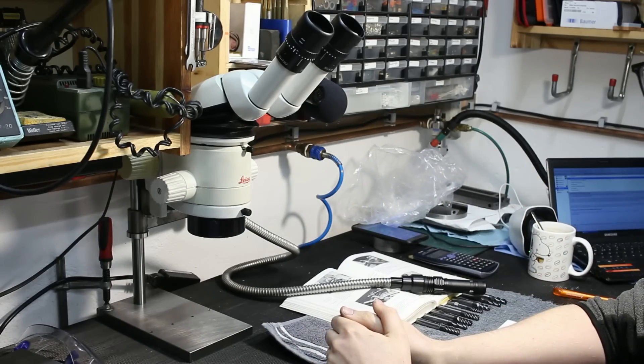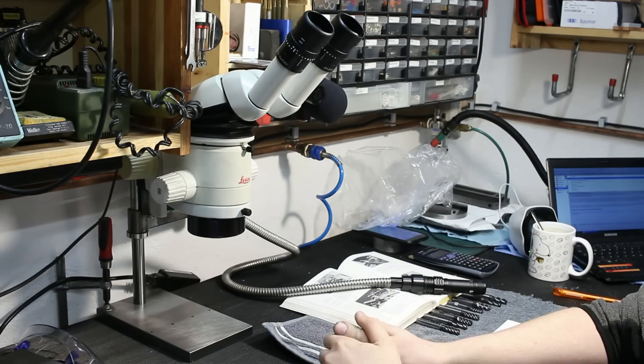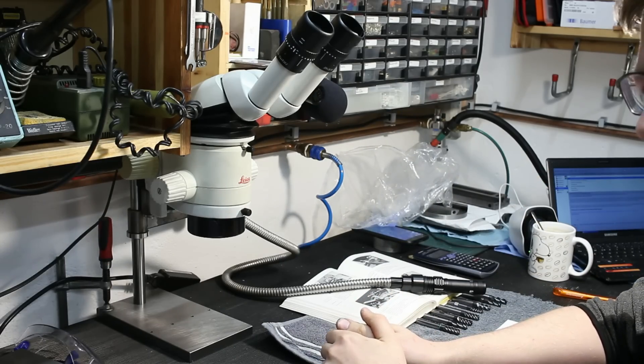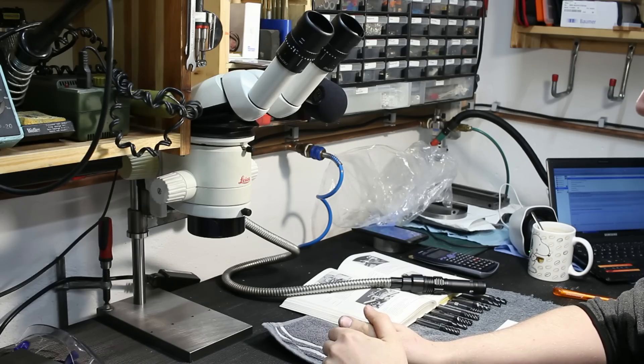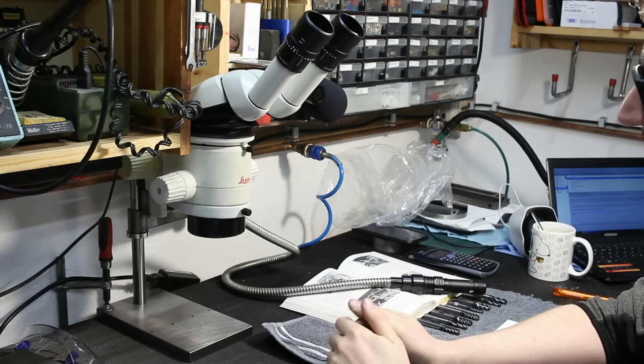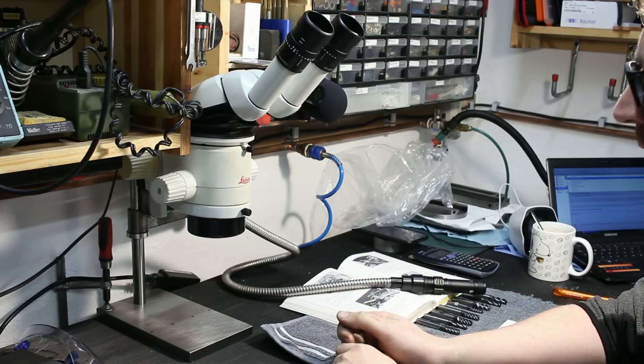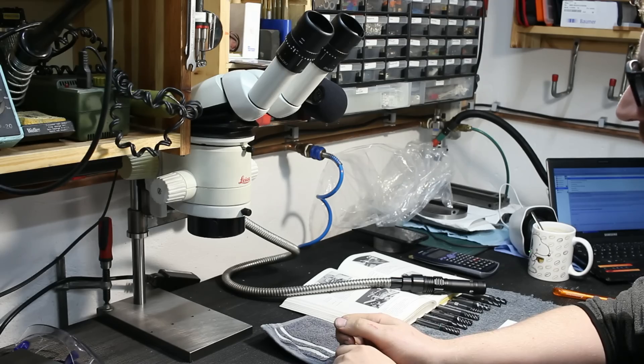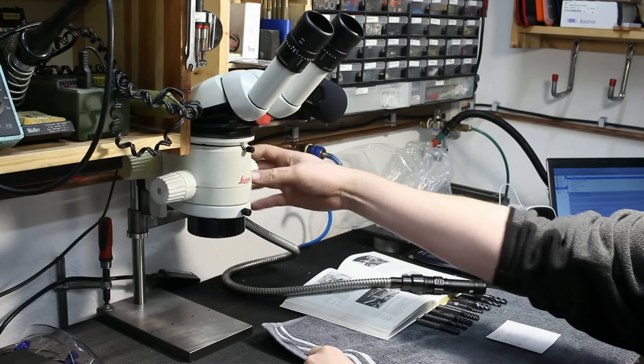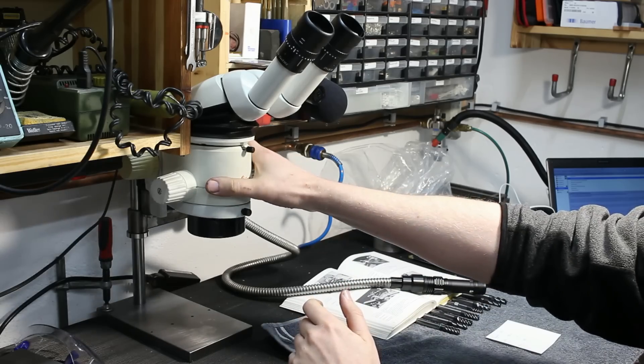This is a Leica MC6 microscope, stereo microscope. A very good friend issued me with this microscope because I was looking for a stereo microscope for the shop for a very long time and couldn't find something that really struck with me. So he told me to just take this.